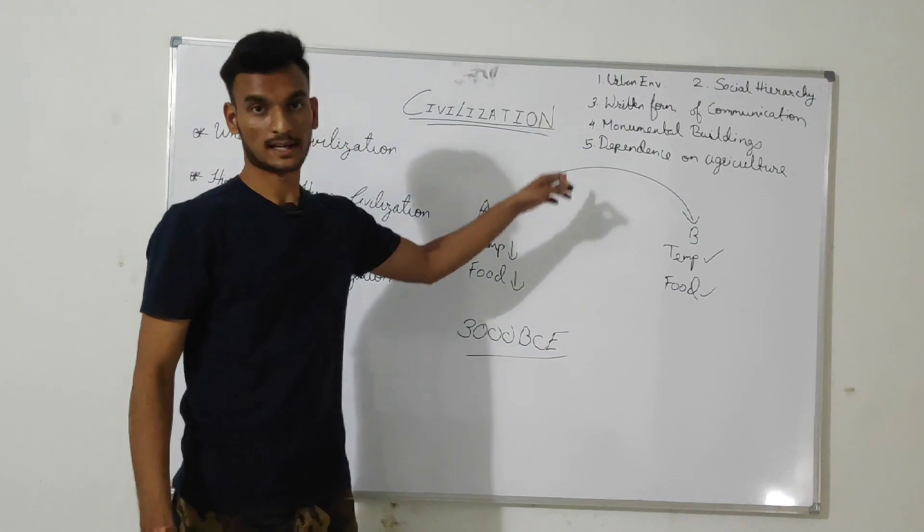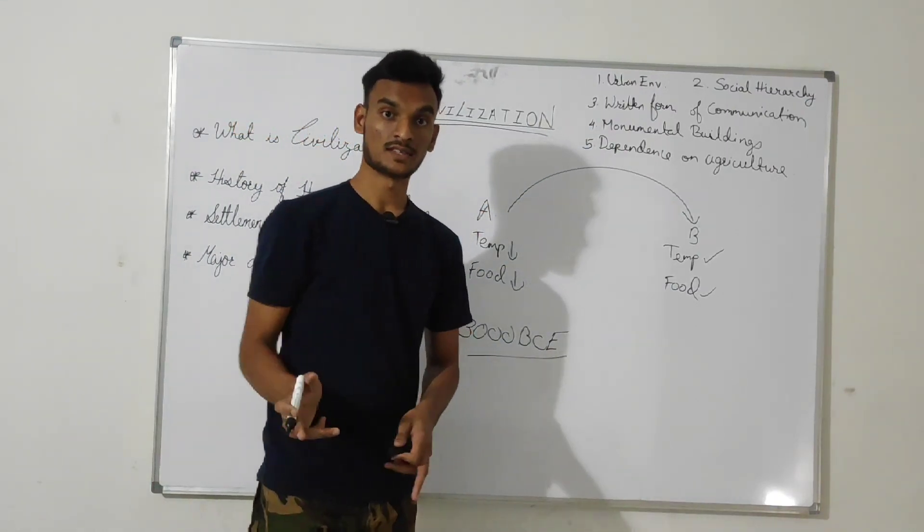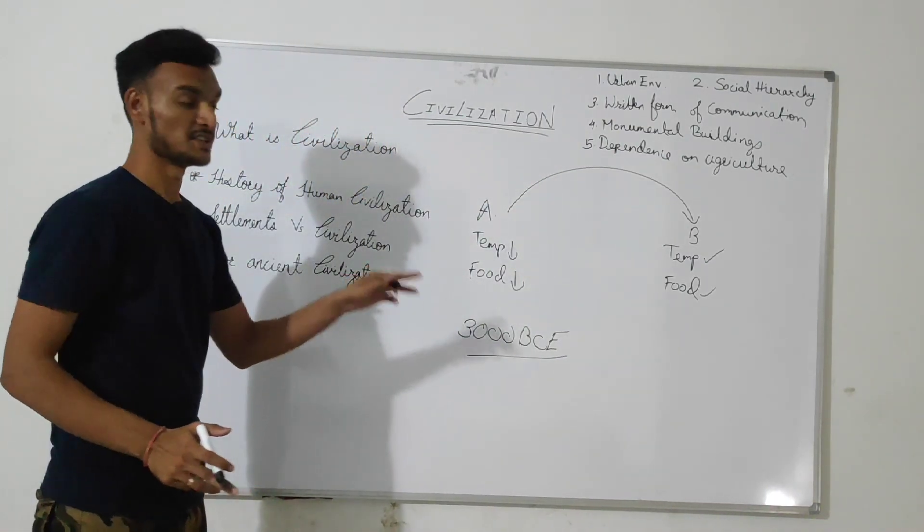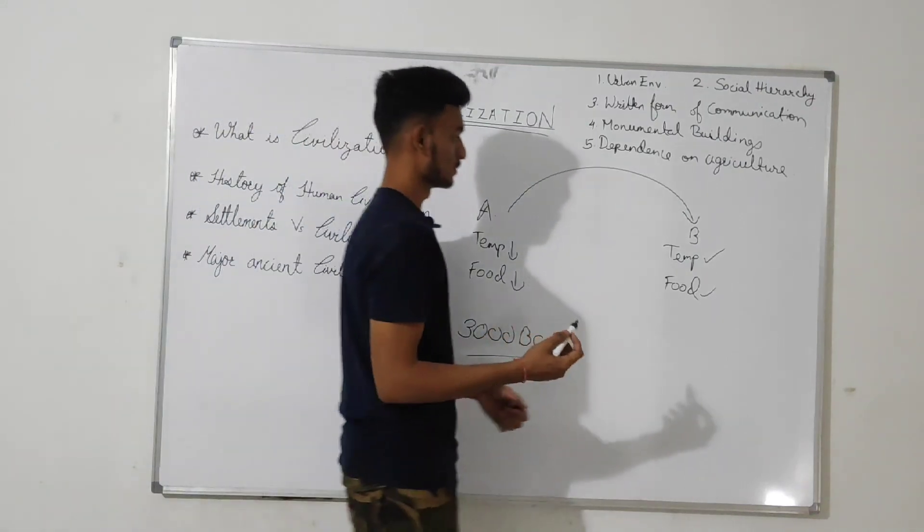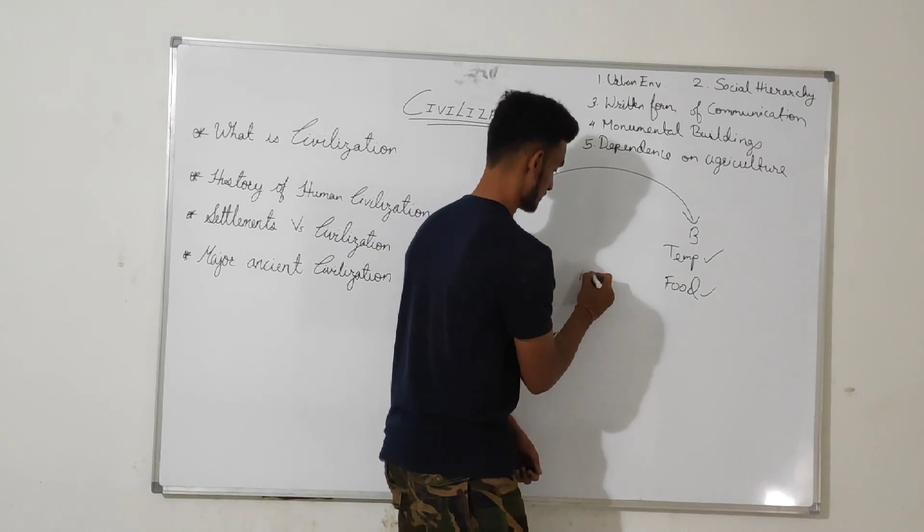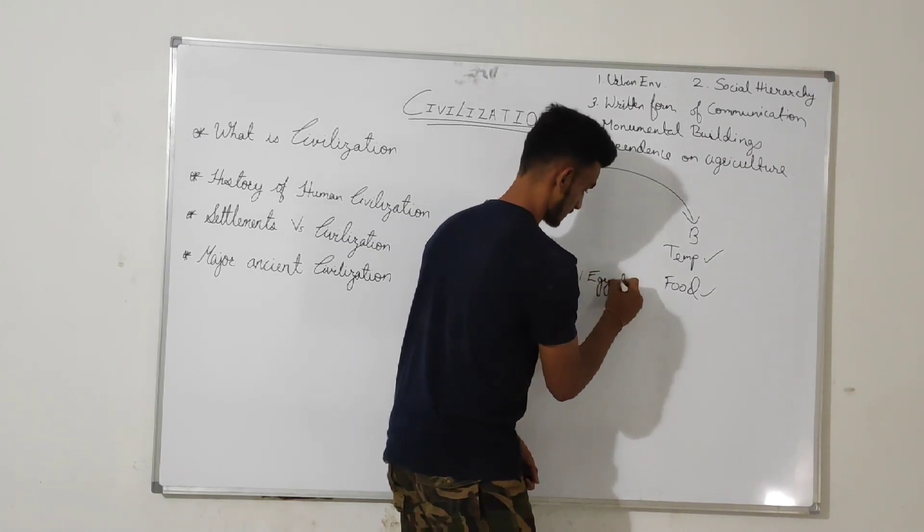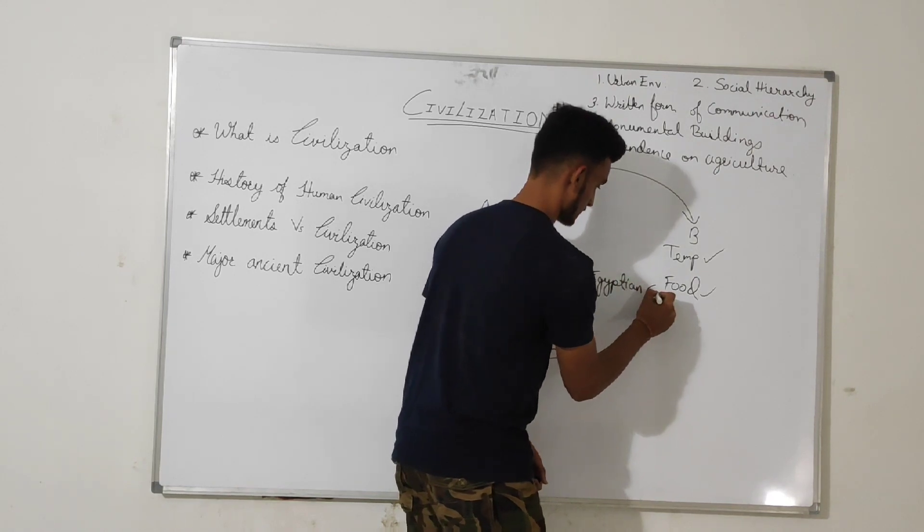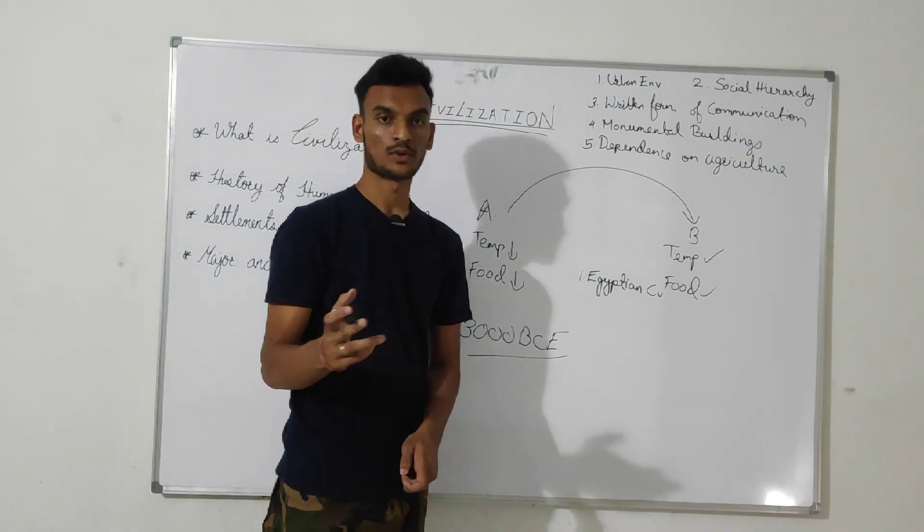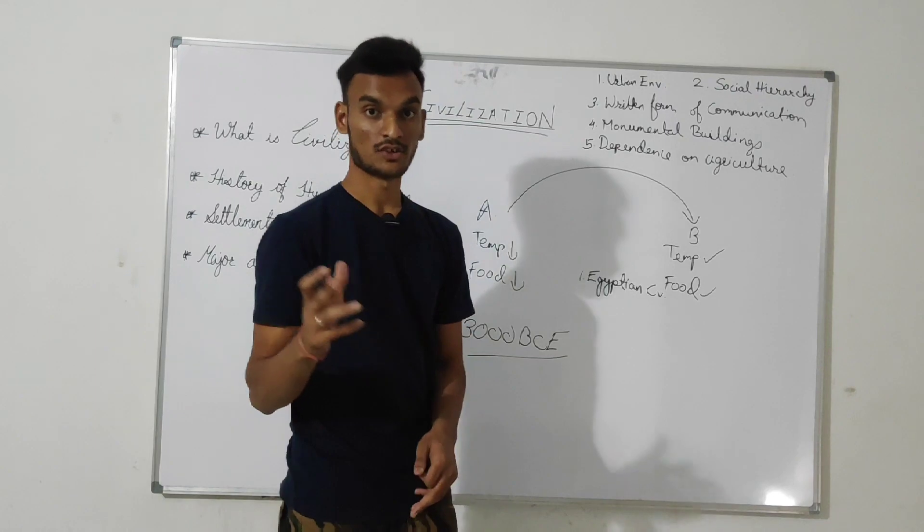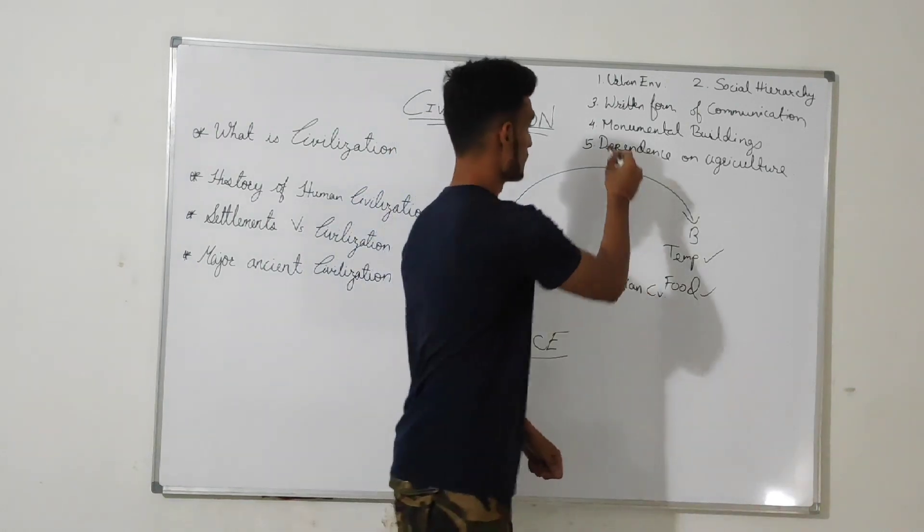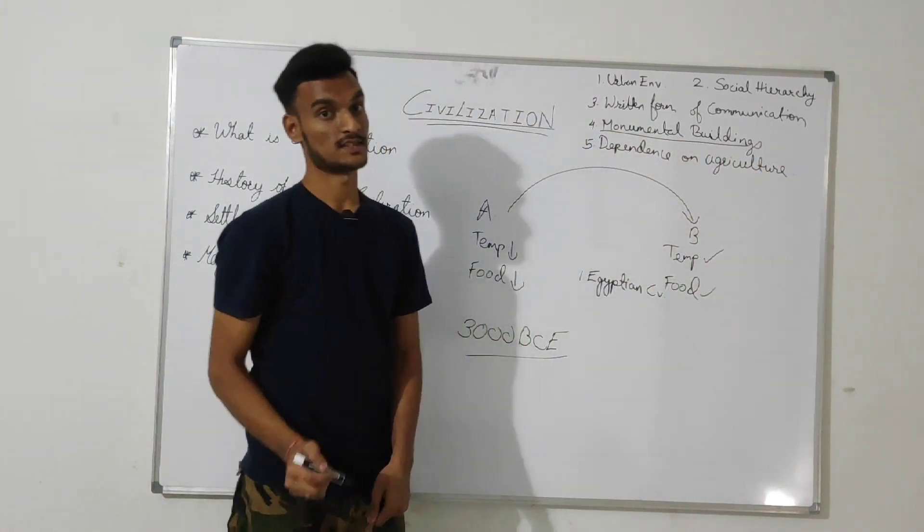So all these factors differ a civilization from a settlement. So let's see some major ancient civilizations. First, Egyptian civilization. Many students might be knowing about Egyptian civilizations and the pyramids of Egypt. From this civilization we can confirm that monumental buildings are evident for civilization.